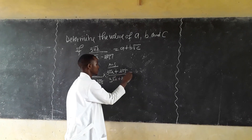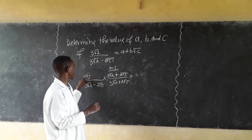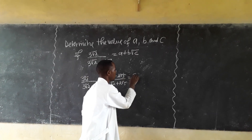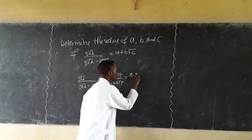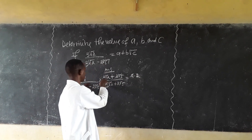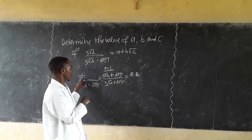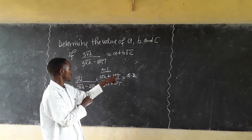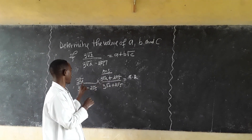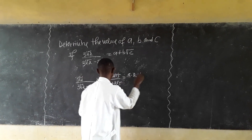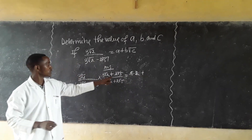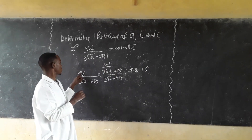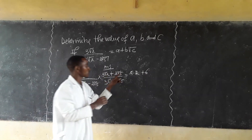This gives us 3√2 times (3√2 plus 2√5) in the numerator. We have 3√2 times 3√2 which gives 9 times 2, and we also have the cross term 2√5.